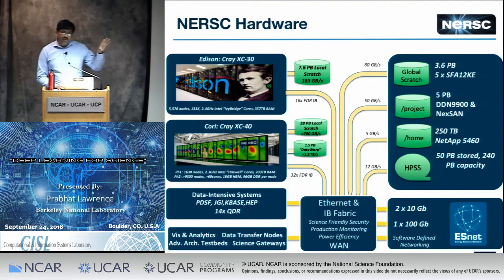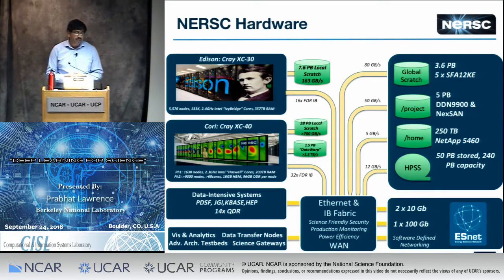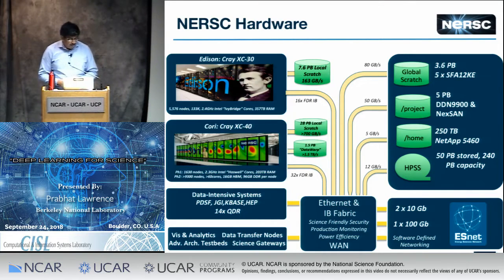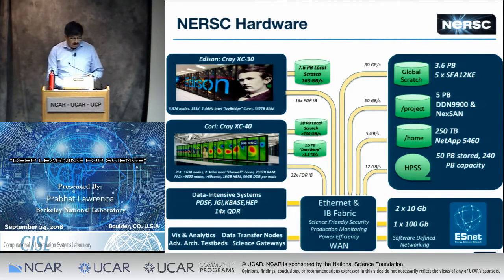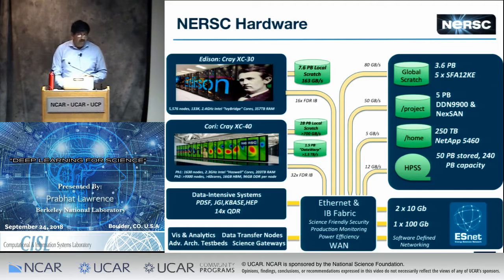Our flagship machine right now is a Cray XC40 system named Cori, number 10 on the Top 500 list, with about 9,800 Knights Landing nodes and 2,000 Haswell nodes. When people want to run data analysis at scale, IO is the big challenge. We have a Lustre 28-petabyte file system supporting hundreds of gigabytes per second IO rates, plus a burst buffer of 1.5 petabytes that can sustain 1.5 terabytes per second IO rates.